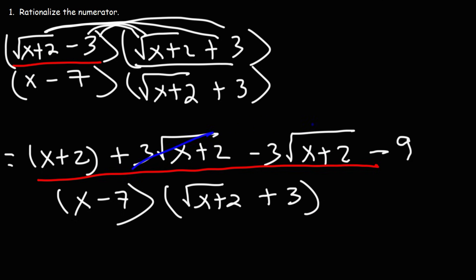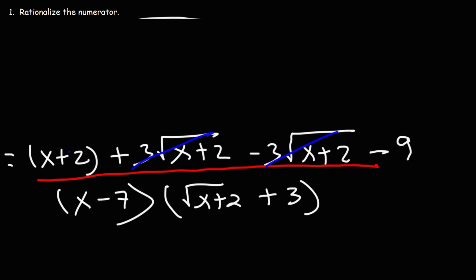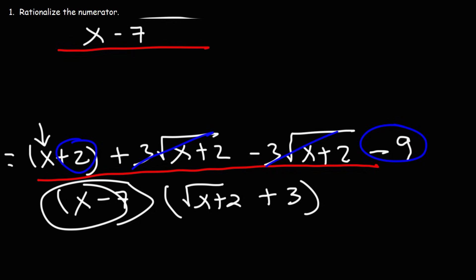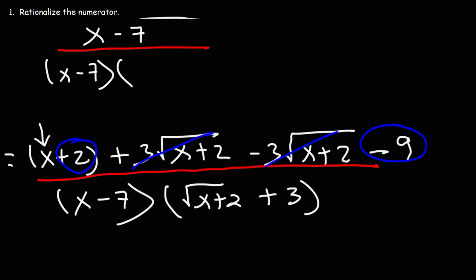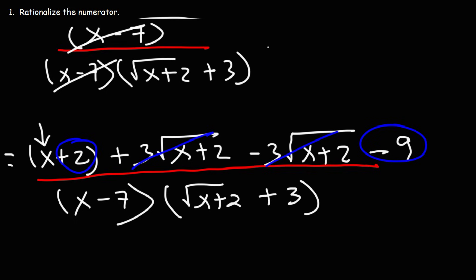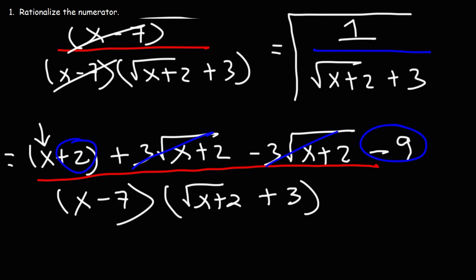Just like before, the two middle terms — positive 3 root (x plus 2) and negative 3 root (x plus 2) — are going to cancel and add up to 0. So what we have left over is x plus 2 minus 9. Positive 2 minus 9 is negative 7, so we're left with x minus 7 on the numerator. On the bottom we have the factor x minus 7, and x minus 7 divided by itself is 1. So our final answer is 1 over the square root of x plus 2 plus 3.